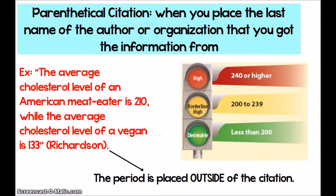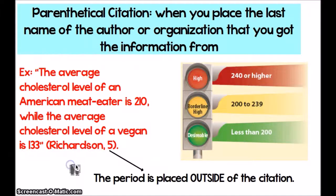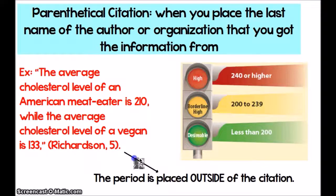Parenthetical citation is where you place the last name of the author or the organization that you got the information from. Sometimes you're going to be quoting a source where an author is not listed or unknown, and in that case instead of putting an author's name, you would put some other reference to where the information came from. As you can see in the example on the screen, we've got a quote — 'The average cholesterol level of an American meat eater is 210, while the average cholesterol level of a vegan is 133' — and then after the quote you have the parenthetical citation with the last name of the author, a comma, and then the page number. The period is placed outside of the citation: the ending of the quote has a quotation mark, then the parentheses with the citation information, and then your period.